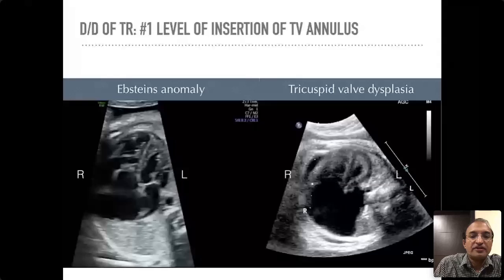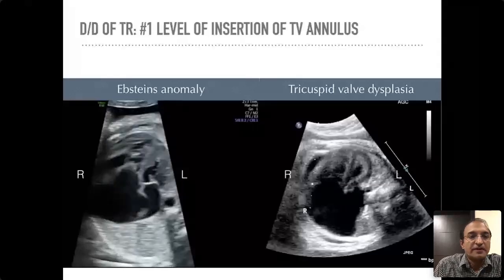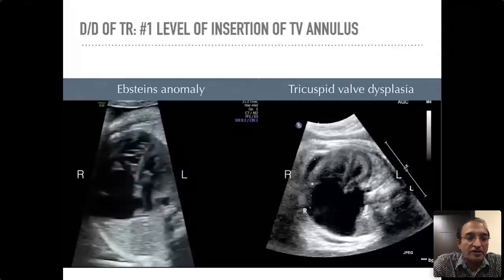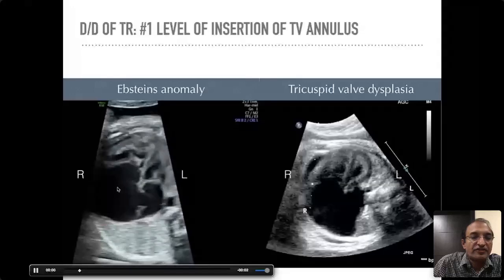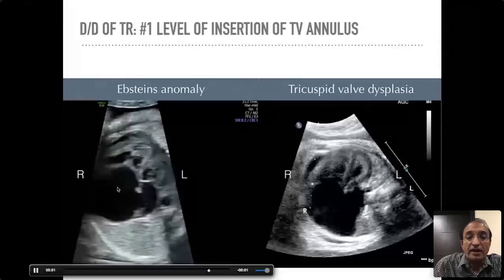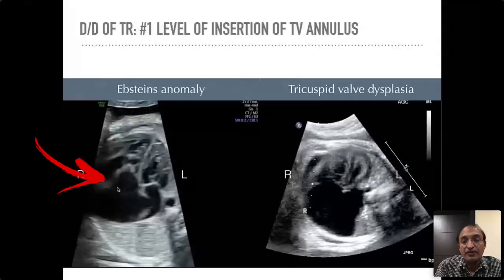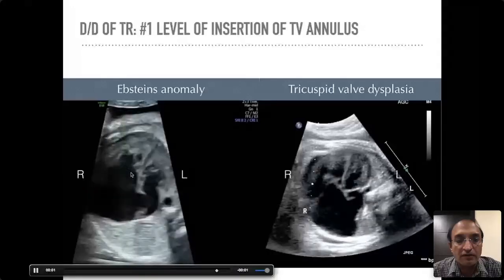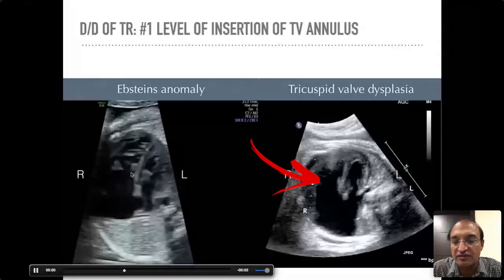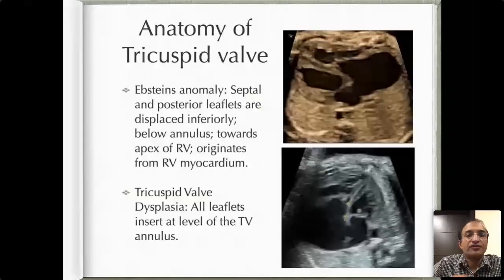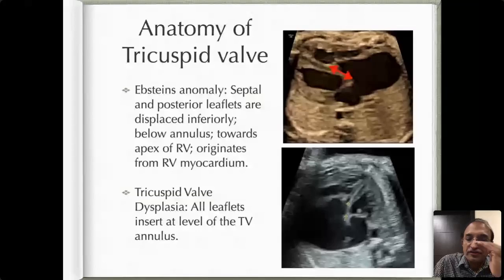Let's look at these pictures side by side. This movie is labeled as Ebstein's anomaly — note where the tricuspid valve is inserting. Right and left are marked so you can identify the right and left ventricles. In Ebstein's, the tricuspid valve inserts at a much lower level, displaced downwards. In tricuspid valve dysplasia, it stays at the normal insertion level. The hallmark of Ebstein's is downward displacement of the septal leaflet, whereas in dysplasia all leaflets insert at the normal level.